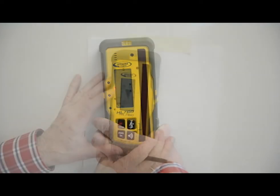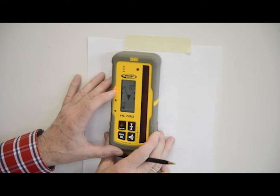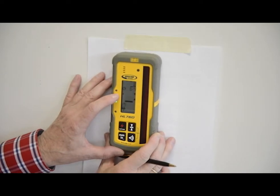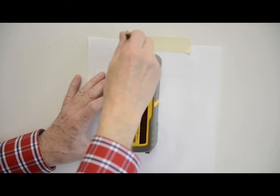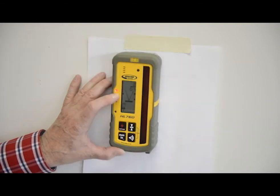Gradually raise or lower the receiver until you get an on-grade reading for the plus Y axis. Using the flat surface on the top of the receiver, make a mark on the wall.